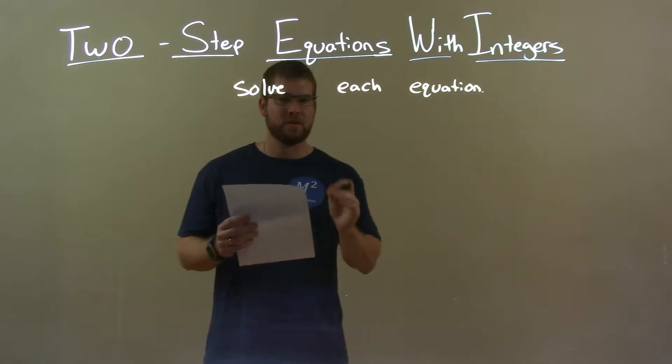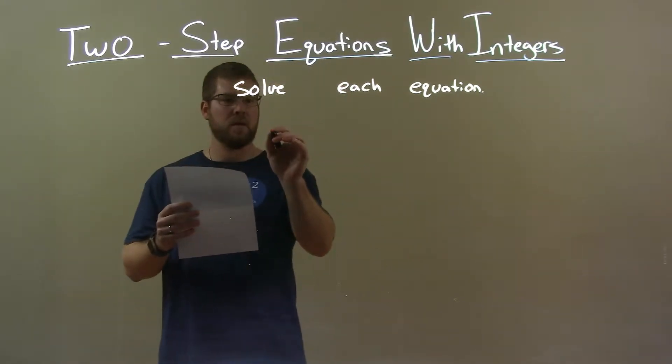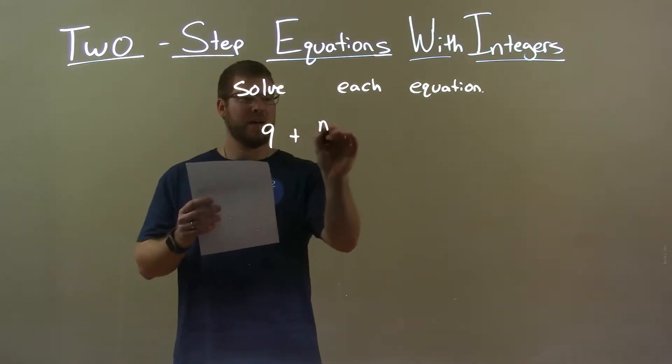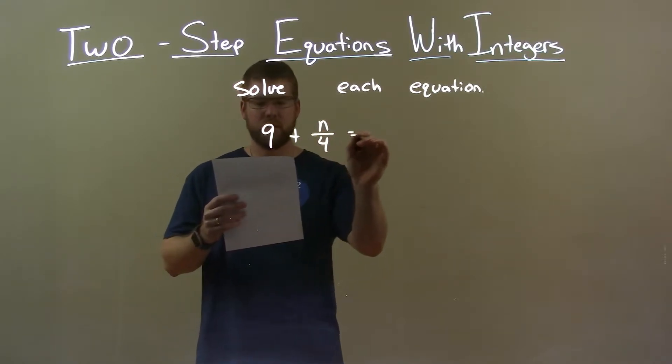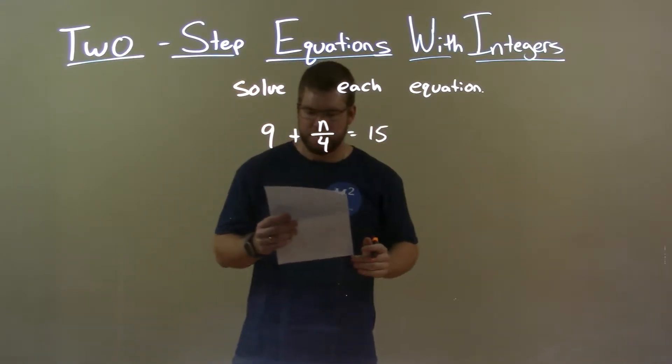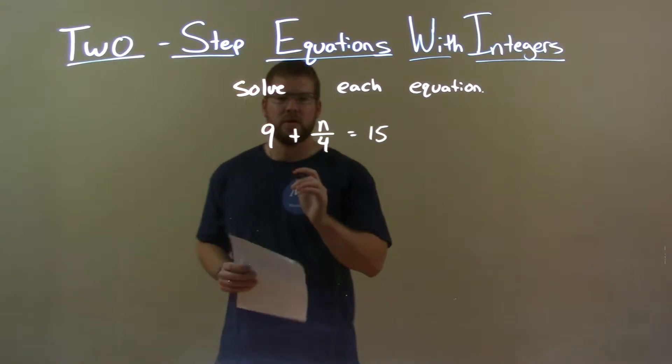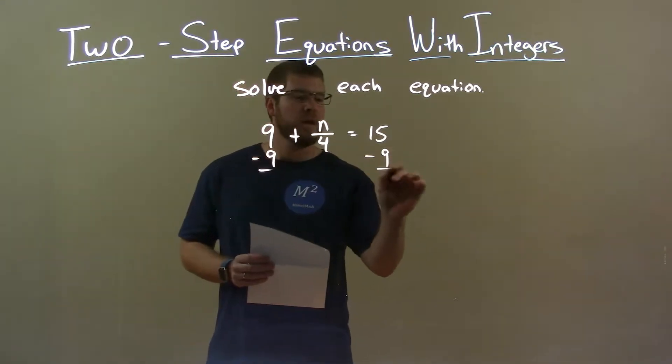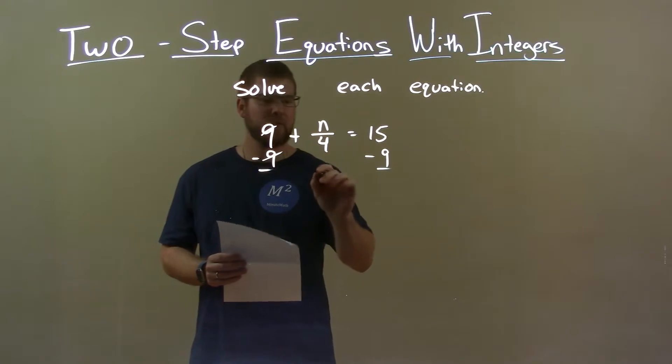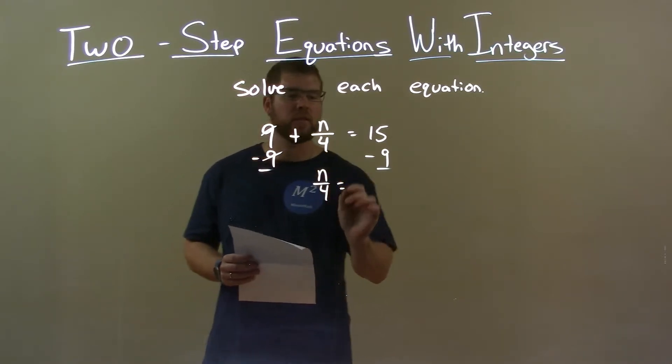Now, if I was given this equation, 9 plus n over 4 equals 15. First thing I want to do here is subtract both sides by 9. This will eliminate the 9 on the left, giving me n over 4 on the left.